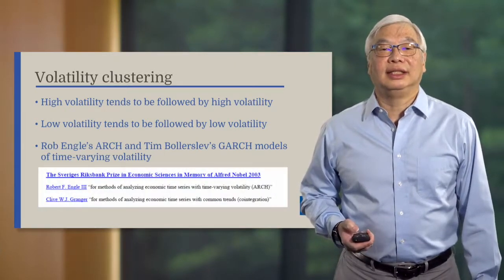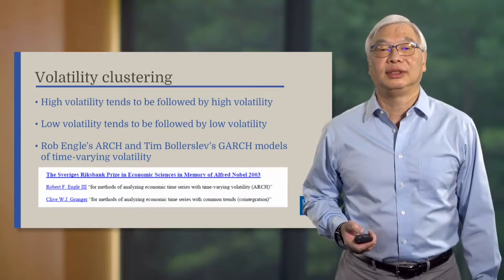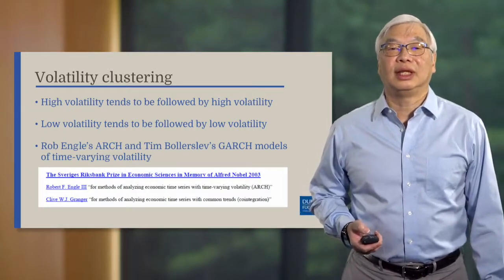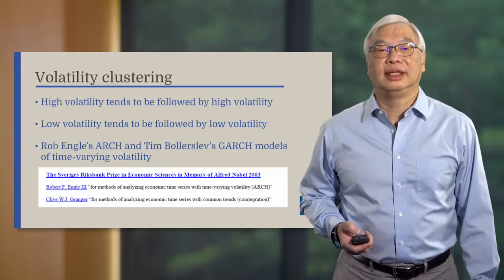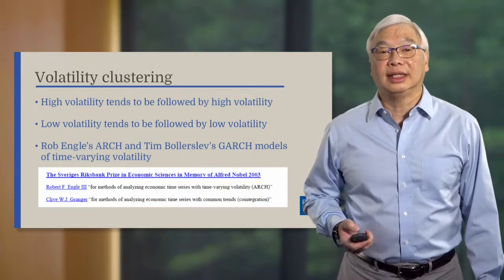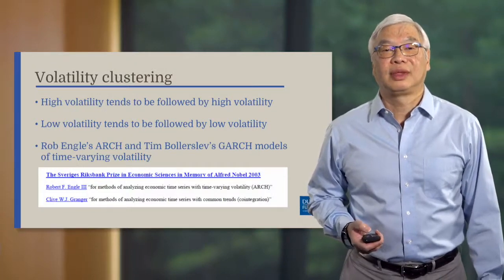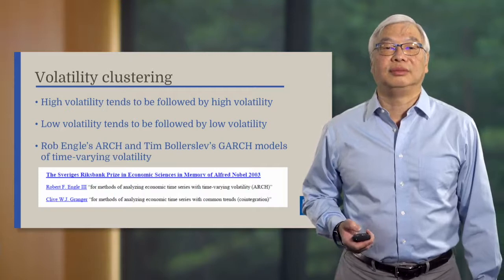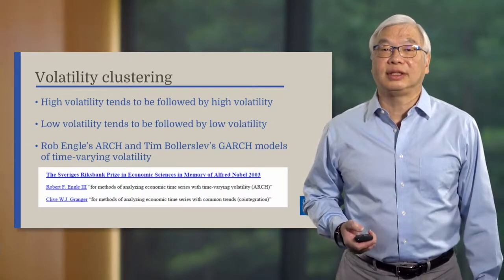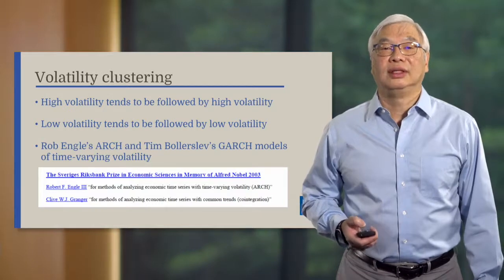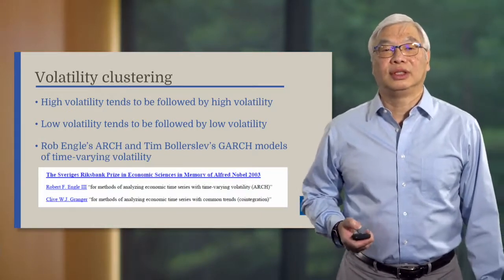Professor Engel's idea has been so widely used in modeling financial time series that he was awarded half of the 2003 Nobel Prize in Economics. The other half of the prize went to Professor Clive Granger. The Nobel Prize Committee's website specifically recognizes ARCH as the reason for awarding the Nobel Prize to Professor Engel.